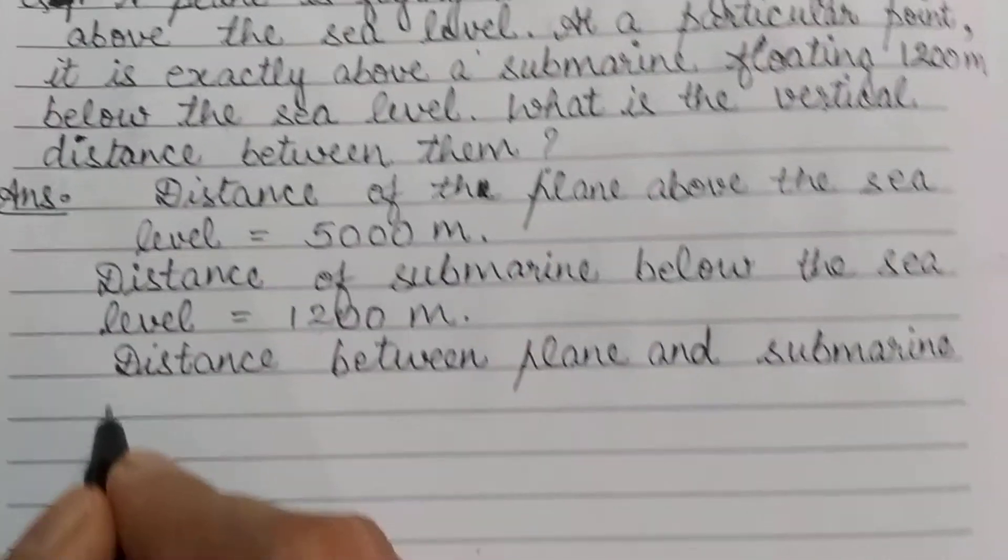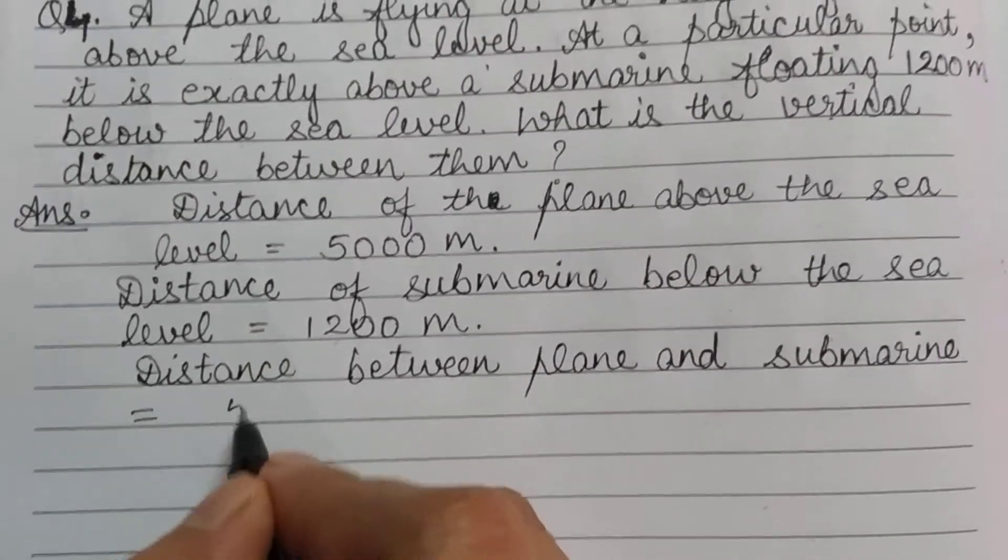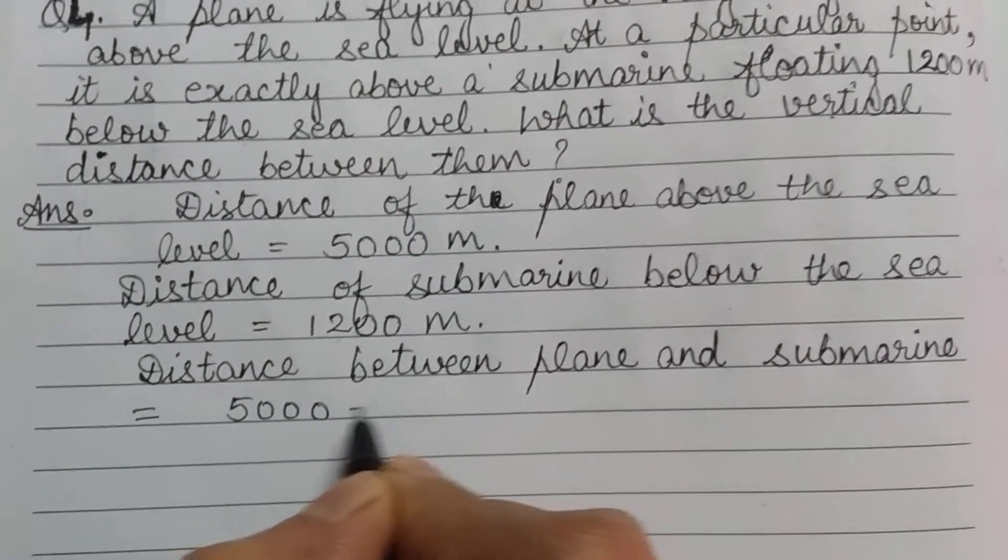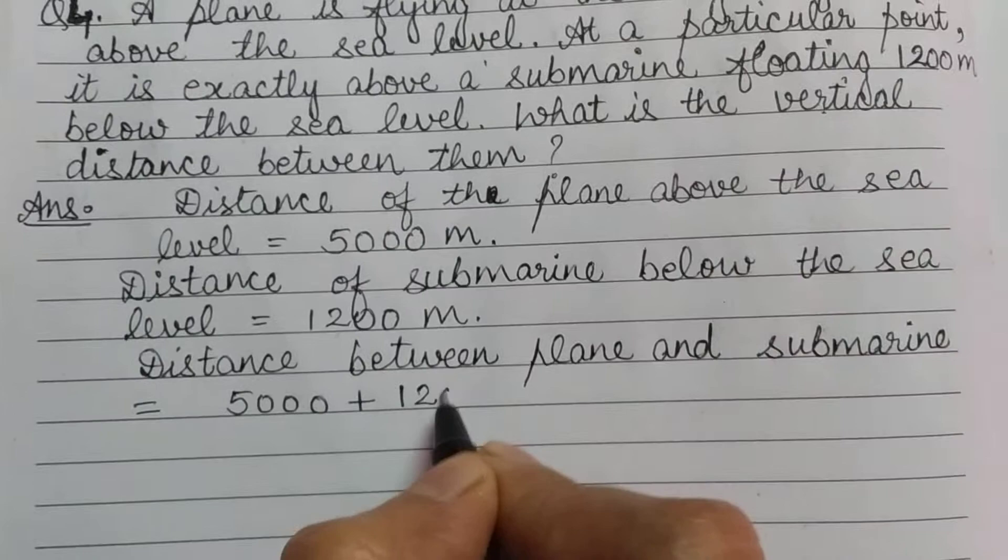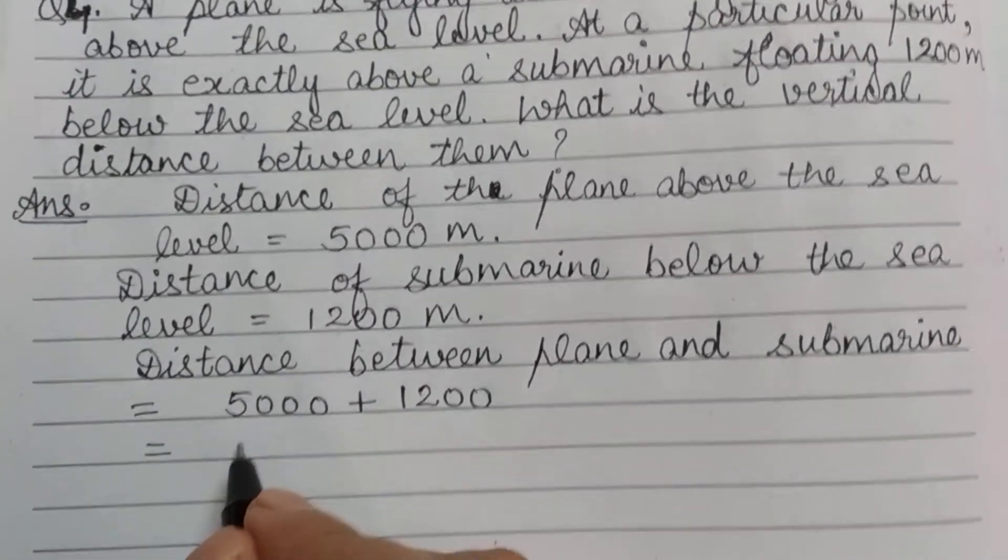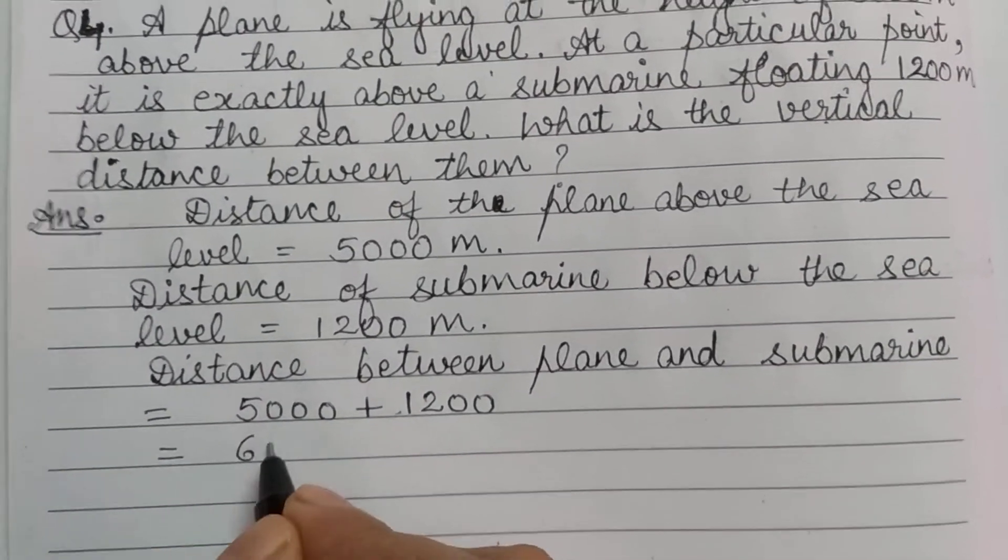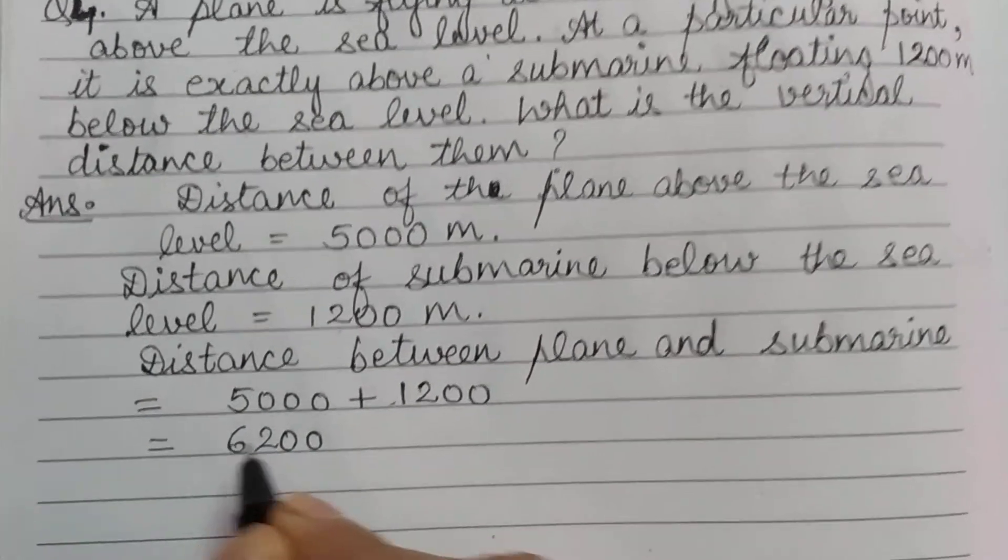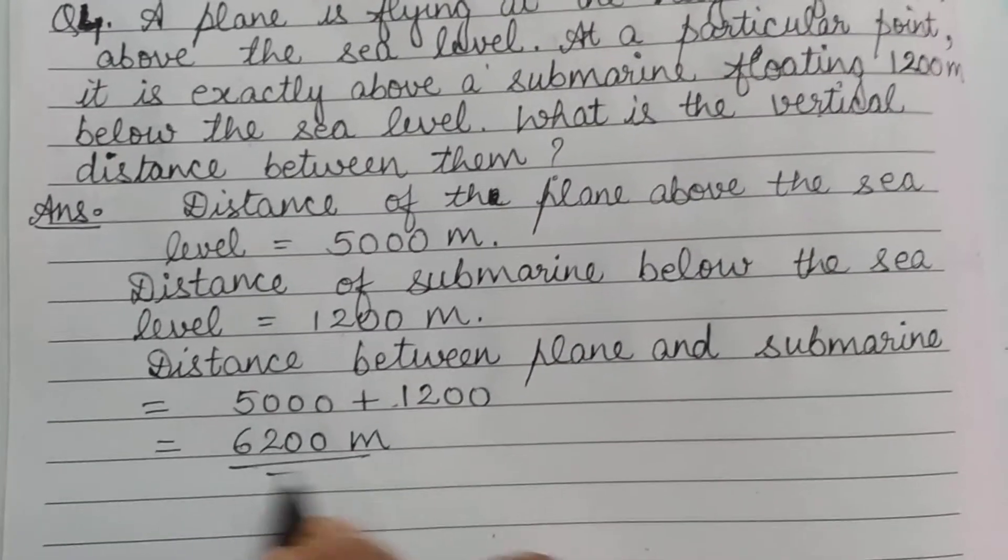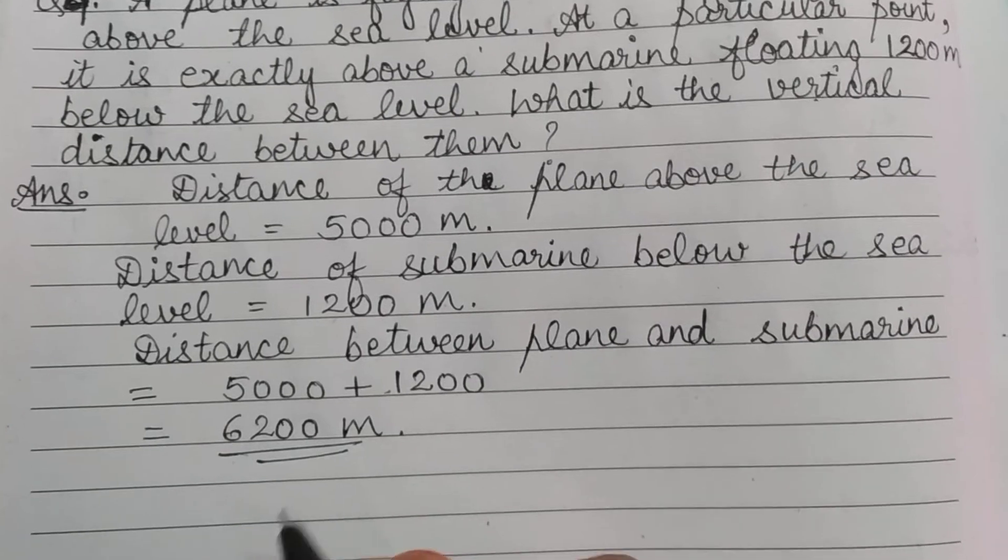Distance between plane and submarine is equal to 5000 plus 1200. That is equal to 6200 meter. This is the answer.